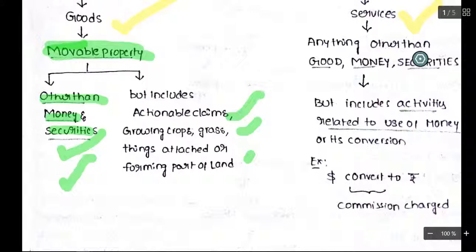Things attached to the land — meaning cultivation of land, cultivation of crops — if they are sold, they are first covered under the definition of goods. Even if there is an exemption, they are goods first.